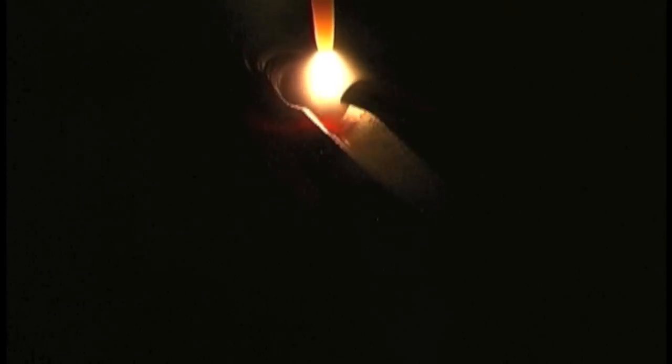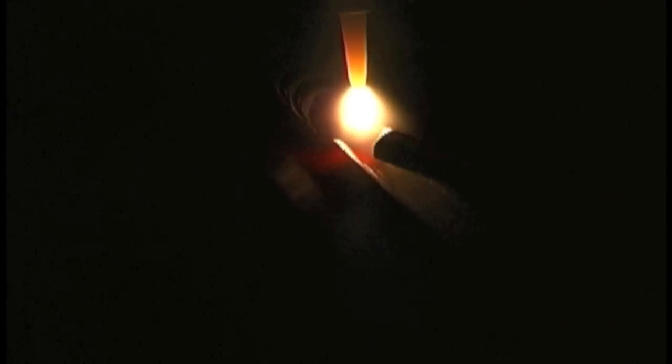The way you get ripples in a weld, or freeze lines, with MIG welding is the way you manipulate the torch. With TIG welding it's usually the addition of rod. Each time you add rod it creates a freeze line and a distinct ripple in the puddle, giving you that stack of dimes look that is sought after, especially in certain industries.